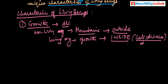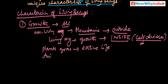Plants grow their entire life, and animals grow to a certain extent and then stop growing. After that, cell division is used for repairing. For example, if something happens to the animal, cell division helps in repair.